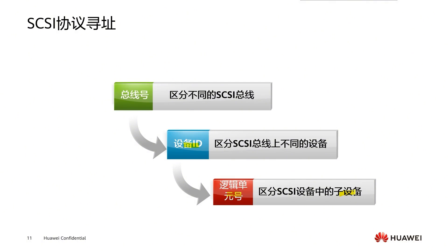Traditional SCSI controllers connect to a single bus and have only one bus number. For enterprise-level servers, multiple SCSI controllers may be configured, resulting in multiple SCSI buses. After introducing the storage network, each FC HBA or iSCSI network card is also connected to a bus, so a bus number must be assigned to each bus. We can use bus number, device ID, and logical unit number together to describe a SCSI target.